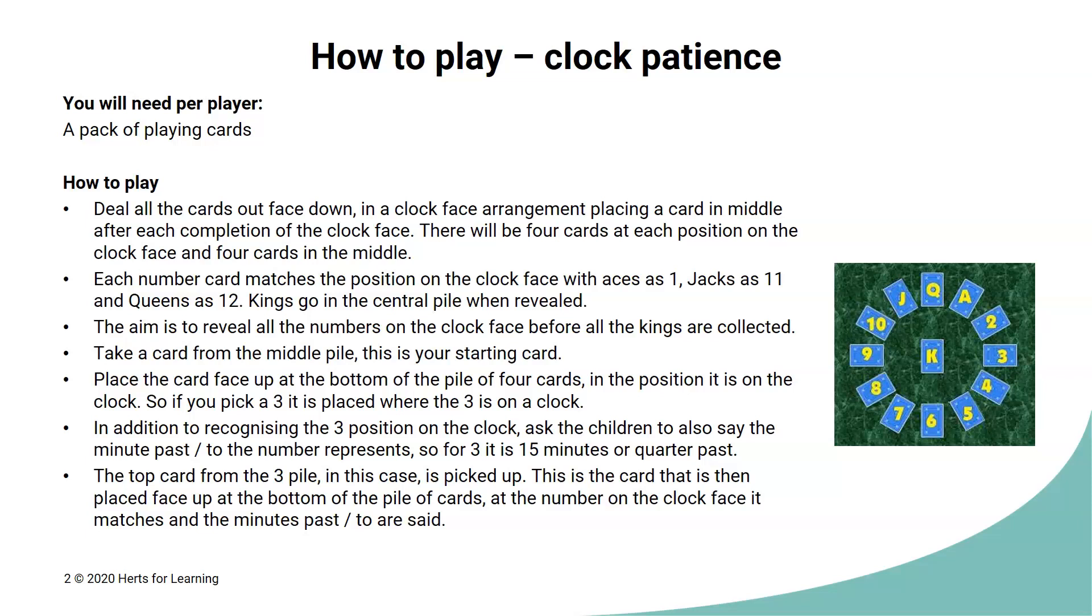Here's a reminder of how to play clock patience. You'll need a pack of playing cards. You deal out all the cards in a clock face arrangement, placing a card in the middle each time. So you end up with four cards in each pile and four cards in the middle. The aim of the game is to reveal all the cards on the outside of the clock face before you end up with four kings in the middle. You start by taking one of the cards from the central pile and placing it in the position it represents on the clock face. You then take the top card from that position and that becomes your next card that you play. You keep going until you reveal all the numbers around the outside or you get all the kings.